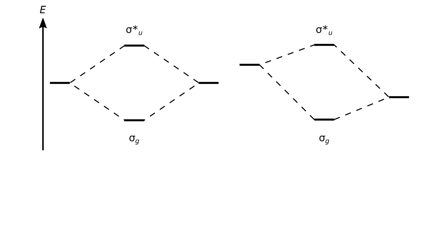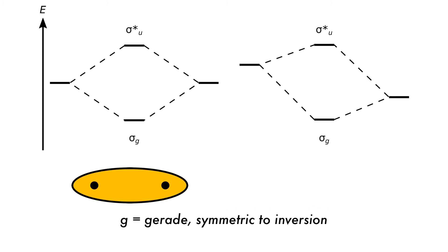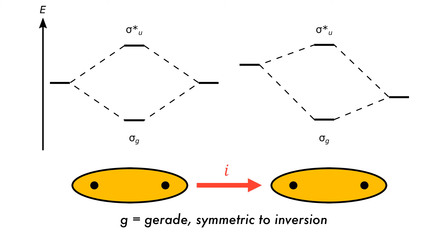Molecular orbitals can also be labeled with a subscript g or u, meaning gerade or ungerade. Gerade molecular orbitals are symmetric to inversion, and ungerade are asymmetric to inversion. The bonding sigma molecular orbital formed from 1s atomic orbitals is ungerade, meaning that it does change on inversion.